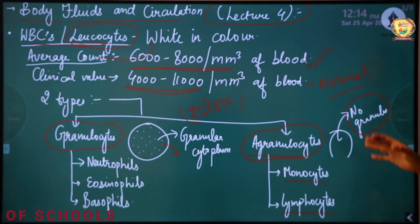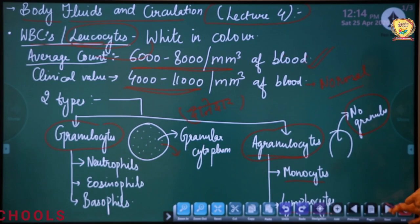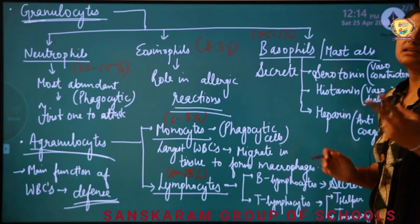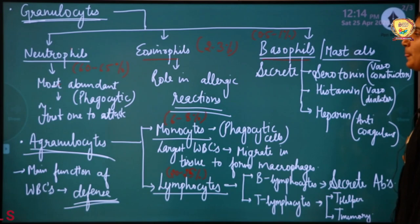We will now study the details of each type — what are neutrophils and their function, what are eosinophils and their function, and what are basophils and their function. Moving ahead, we will start with the granulocytes. Granulocytes have three types: neutrophils, eosinophils, and basophils.